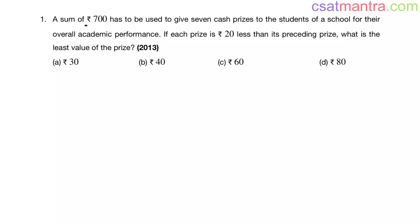A sum of 700 rupees has to be used to give 7 cash prizes to the students of a school for their overall academic performance. If each prize is 20 rupees less than its preceding prize, what is the least value of the prize?